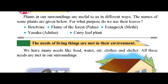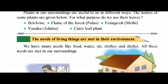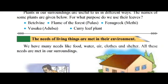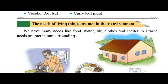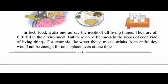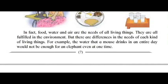The needs of living things are met in their environment. We have many needs like food, water, air, clothes and shelter. All these needs are met in our surroundings. In fact, food, water and air are the needs of all living things. They are all fulfilled in the environment.